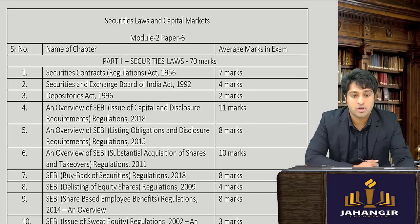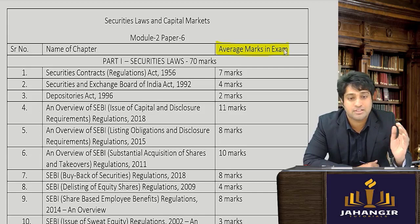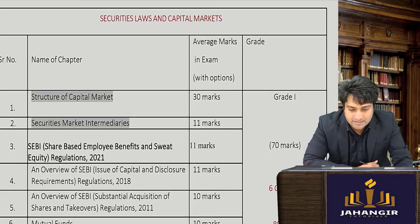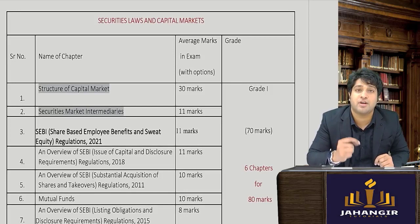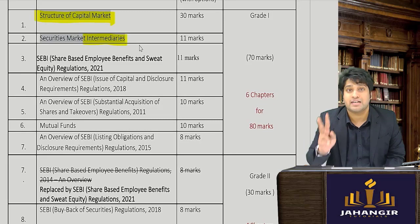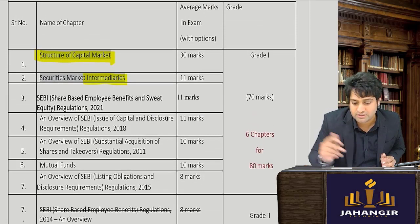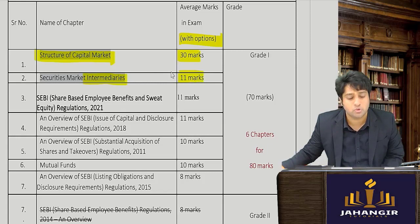The chapter-wise weightage is an average mark and stays valid across attempts. Breaking it down into Grade A, Grade B, and Grade C: Grade A chapters have the highest examination weightage. The very first — no points for guessing — is Capital Structure and Securities Markets, which collectively have a confirmed weightage of 30 marks. Note that the paper comes not for 100 but a total of 130 marks including options.